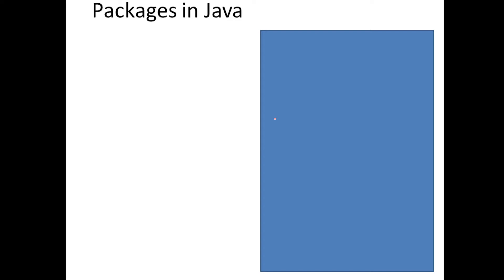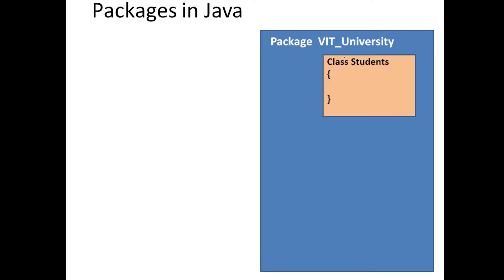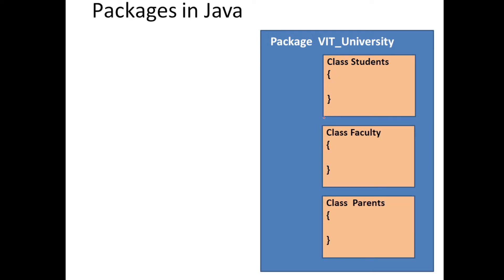What do we mean by a package? Say I have a package called VIT University. Inside this package I have some classes: class Students, class Faculty, class Parents. All these classes belong to the package VIT University. I just group a few classes and give a name to them — say VIT University. We can also group interfaces with classes too.